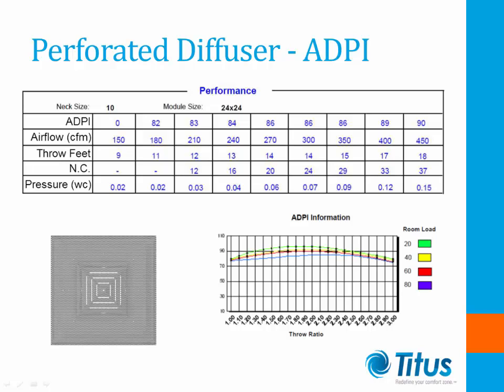Does this make the perforated selection bad? No. If the range of operation is between 160 and 360 CFM, it is acceptable.